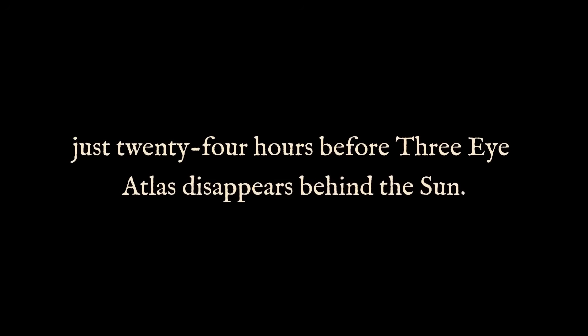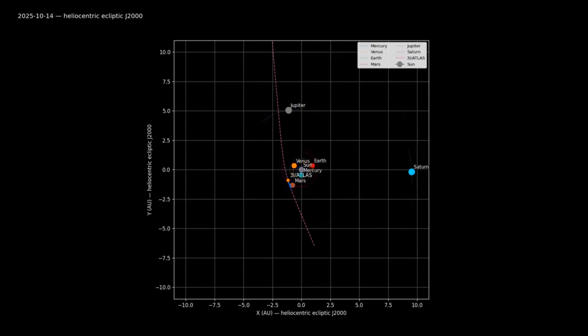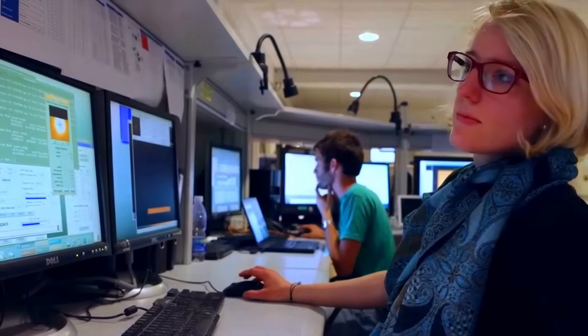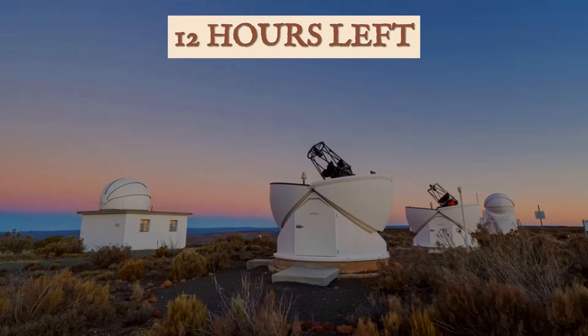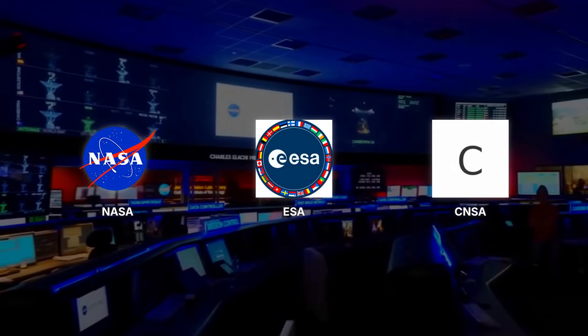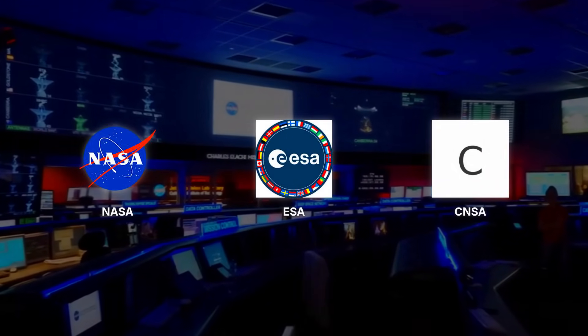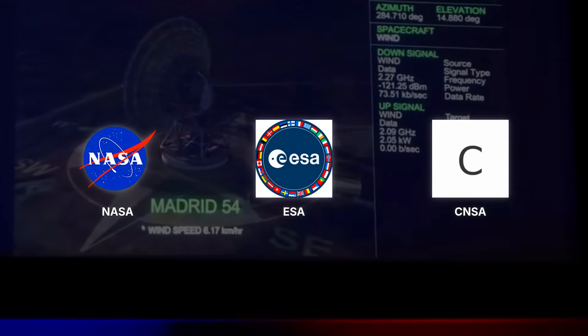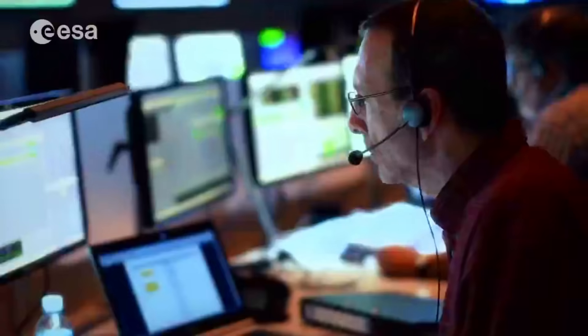October 29th, 2025 is circled on every mission planner's calendar. That's when 3I Atlas swings behind the Sun, completely hidden from Earth's view right as it reaches perihelion. Astronomers are scrambling to secure every last observation slot before the comet vanishes from ground-based telescopes. Mars orbiters have the only clear line of sight during this critical window, so NASA, ESA, and CNSA are locked in negotiations, each vying for time on their spacecraft.